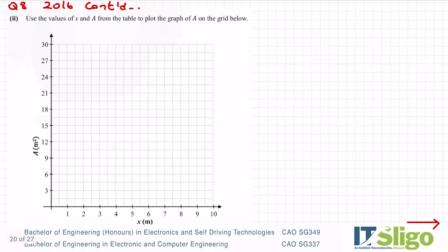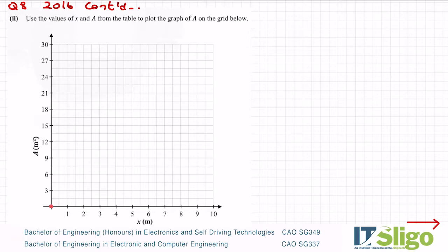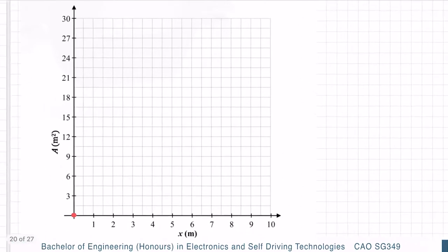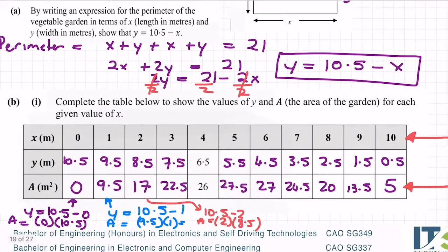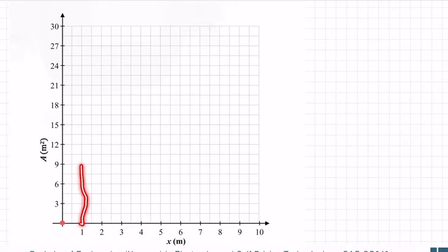Okay, use the values of x and a from the table to plot the graph of a on the grid below. Okay, so the values of x, this row, and the values of a. Okay, so I'm plotting x versus area. So the first x value I have is 0 and my area is 0. Okay, so that couple is 0, 0, so it's down here. I'll just zoom in a little bit so you can see it. My next couple is 1 comma 9.5, so 1 on my x-axis, excuse me, and 9.5 on the area. So 1 on my x-axis up to 9.5 on my area.